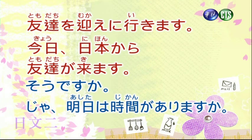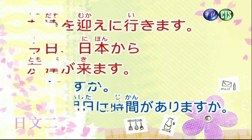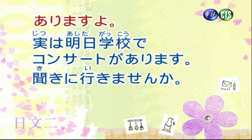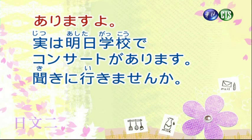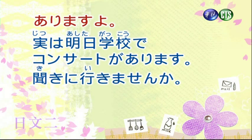じゃあは既然如此的話，明日は時間がありますか（明天有沒有空）。ありますよ（有啊），用來做告知，有空、有時間的意思。実は明日は学校でコンサートがあります（事實上，明天在學校有音樂會）。実はは其實的意思。学校でのでは我們學習過的，表示發生的場所，在學校有一個音樂會，コンサートは音樂會。聞きに行きませんか，聞きます把ます換成動作目的のに，聞きに行きませんか又出現了ませんか，表示委婉的邀約，要不要去聽呢。